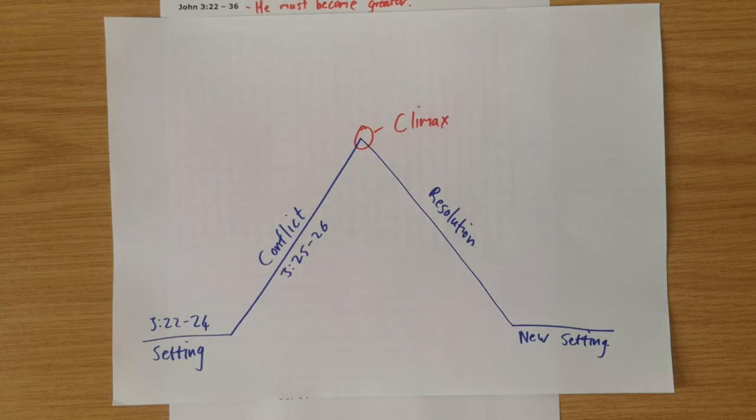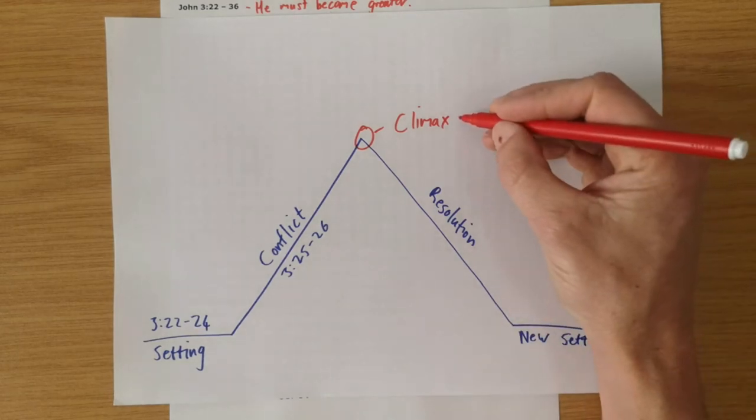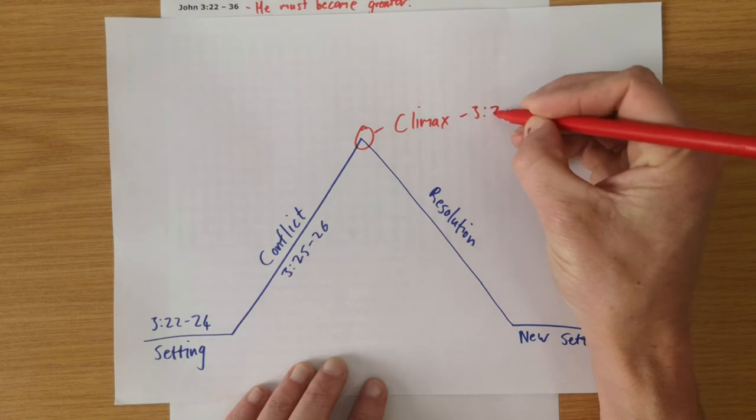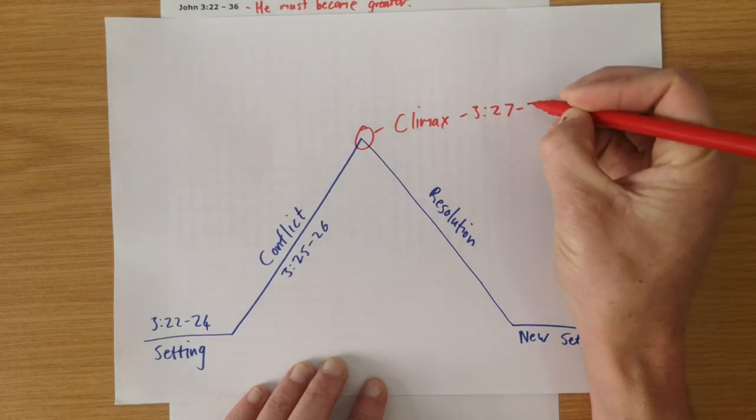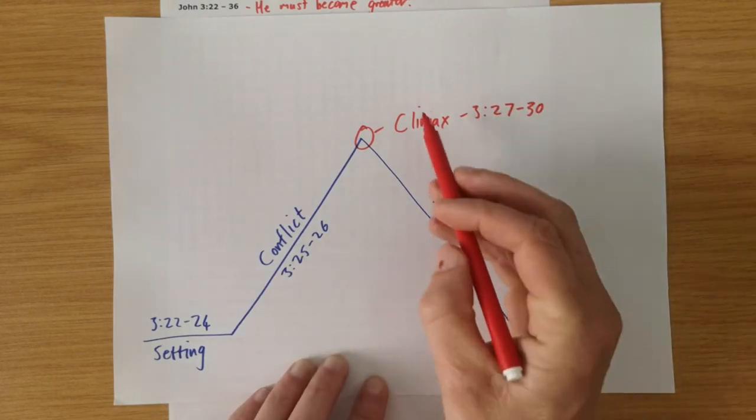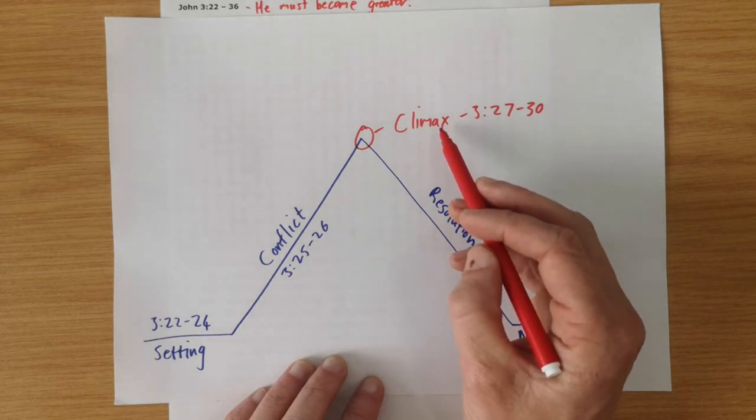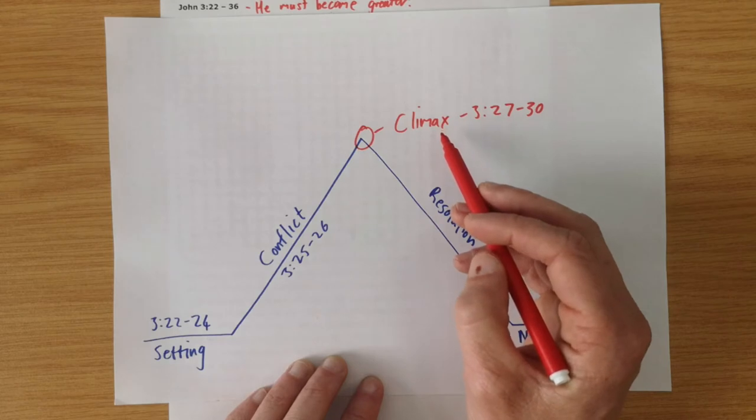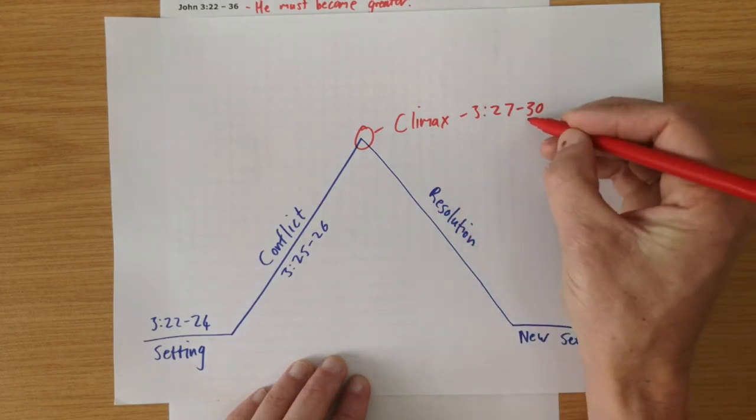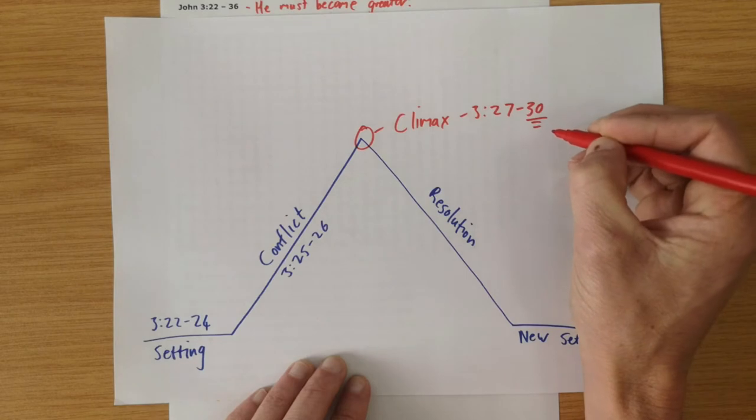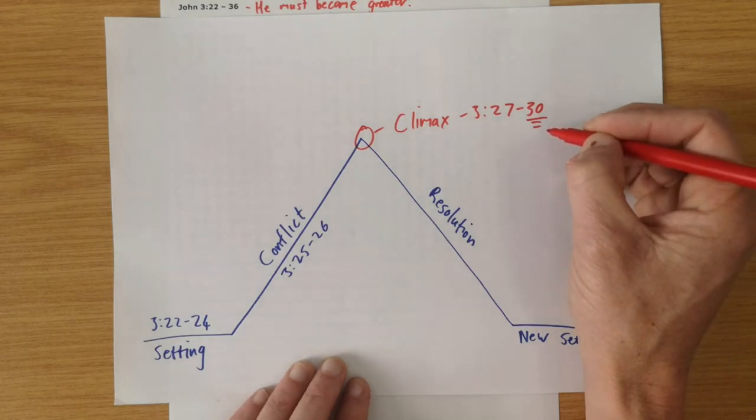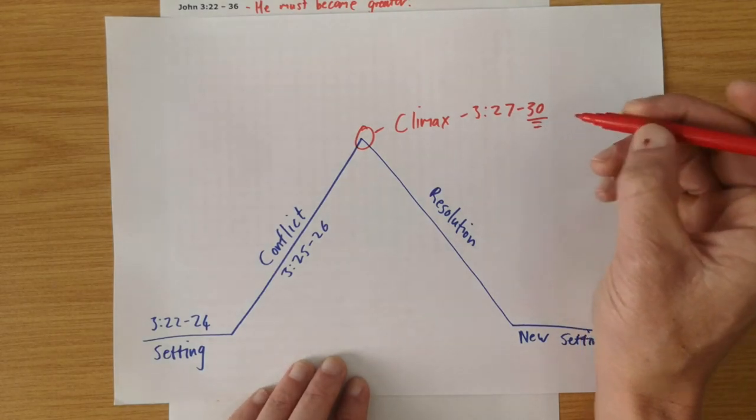And then we see the climax of the story in John the Baptist's words in verse 27 to 30. And we see here climatically that John understands his role. He knows that he has come to humbly declare that Jesus is the Great One. And we see that particularly in verse 30, where he says, He must become greater, I must become less. That was John the Baptist's role.